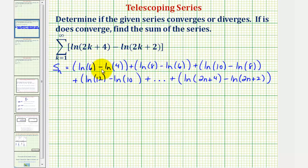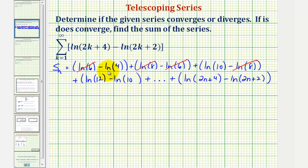Now let's begin simplifying and see if we can notice the pattern to find the simplified formula for the partial sum. Looking at these first two groups, notice how natural log six would simplify out — we have natural log six minus natural log six. So for the sum of the first two groups, we'd have negative natural log four plus the first term in the second group, which is natural log eight. Continuing, natural log eight minus natural log eight cancels, so for the partial sum of the first three groups, we still have negative natural log four and the remaining term is natural log ten. Simplifying again, natural log ten cancels, and for the partial sum of the first four groups we only have negative natural log four plus natural log twelve.